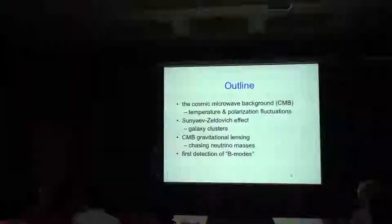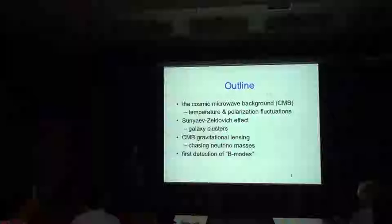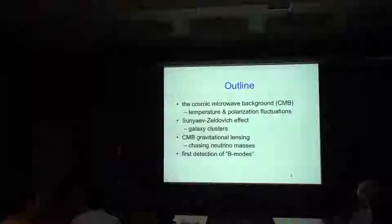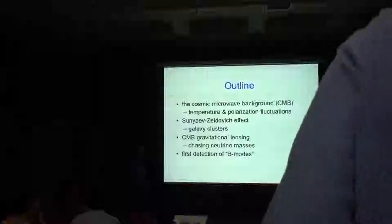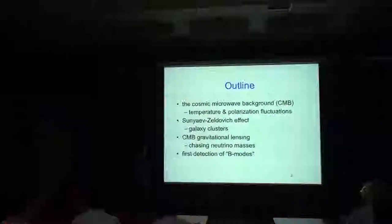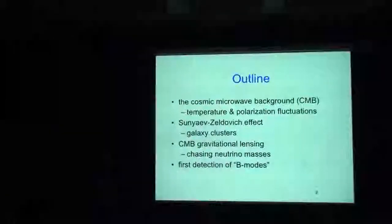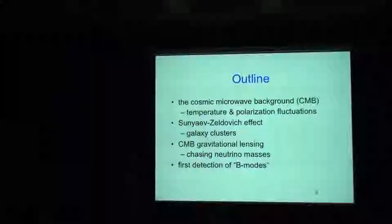I'm going to talk about the cosmic microwave background, and in particular temperature and polarization fluctuations. I'll give an overview of the CMB — what it is, what the fluctuations are, what they look like. I'll quickly show a few results about the Sunyaev-Zel'dovich effect. Then I'm going to spend the rest of the talk on gravitational lensing of the CMB, which is useful for things like getting neutrino masses. And the last thing I'll show is the first detection of what are known as B-modes.